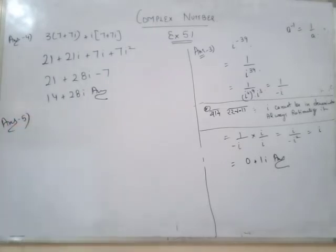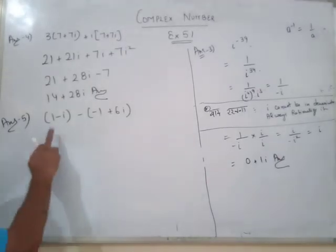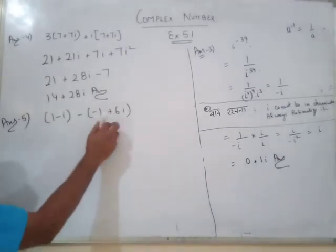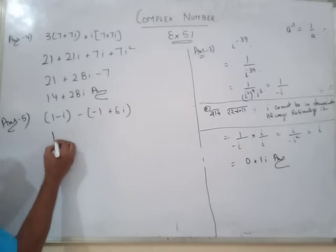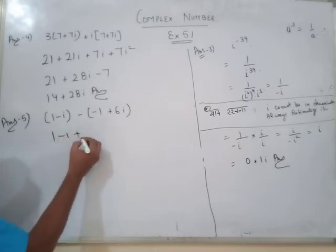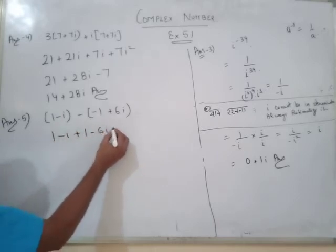Answer number 5: the question is 1 minus 1 minus one plus 6 iota. After simplification: 1 minus minus minus plus 1 minus minus 6 iota. This will be your answer.